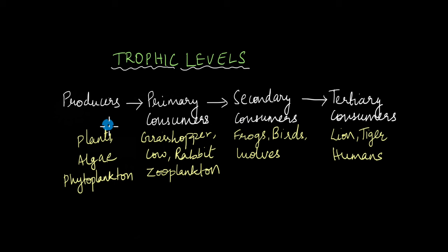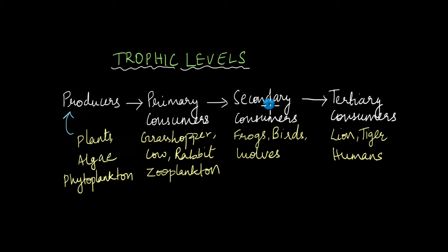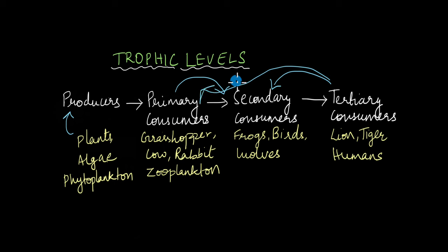Each trophic level represents a specific place an organism takes in the food chain or the food web. Producers form the first trophic level — plants, algae, and phytoplankton occupy this level. Producers are consumed by primary consumers like grasshoppers, cows, and rabbits, forming the next trophic level. These primary consumers are consumed by secondary consumers like frogs, birds, and wolves. Tertiary consumers are those that consume either the secondary or primary consumers themselves.